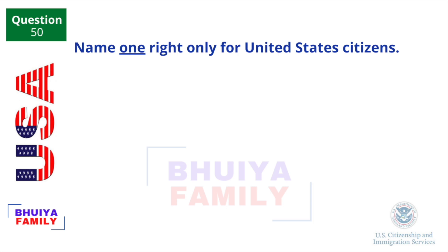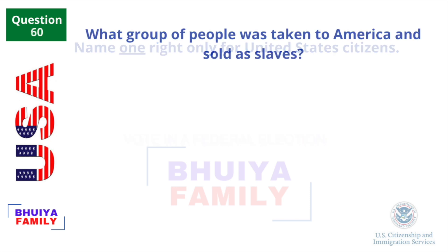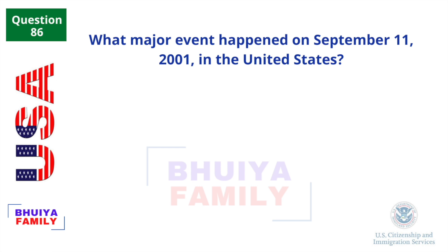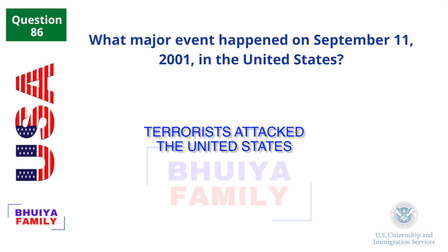Name one right only for United States citizens. Vote in a federal election. What group of people was taken to America and sold as slaves? Africans. What major event happened on September 11, 2001 in the United States? Terrorists attacked the United States.